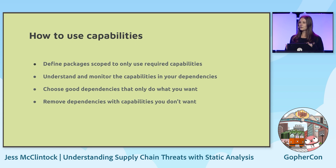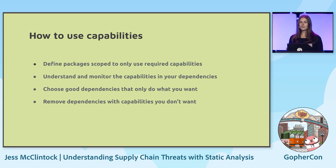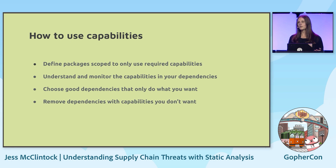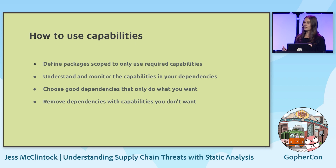Capabilities can be used to ensure that when you're writing a package, you're only using the capabilities you need, but also to check if your dependencies are only doing the things you expect them to do on an ongoing basis. This would avoid some of the issues we saw before about malicious updates or packages that aren't scoped well and wind up having security vulnerabilities. You can also use them to compare potential packages you're intending to use, or to remove dependencies you no longer have trust in.